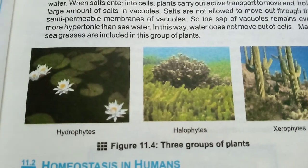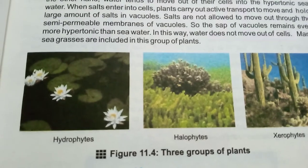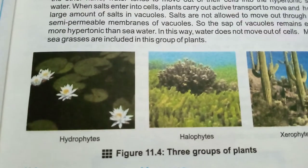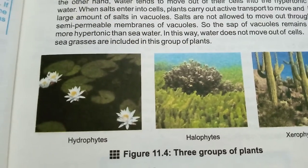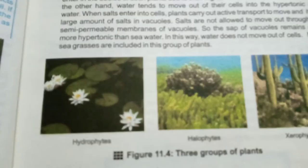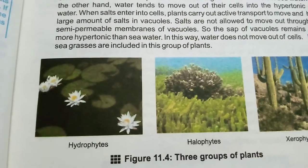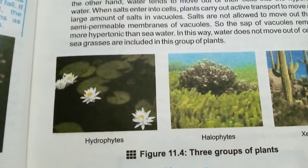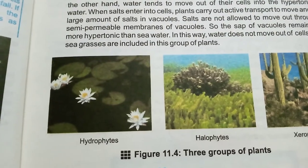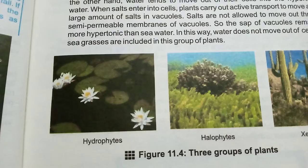Hydrophytes — as the name suggests — are plants which are completely or partially submerged in fresh water. Some part is in water and some part is outside. Such plants don't face a shortage of water; instead, they have developed a mechanism to remove their extra water from cells. They have a large number of stomata on the upper surface of the leaf to remove the extra amount of water. A common example is the water lily.